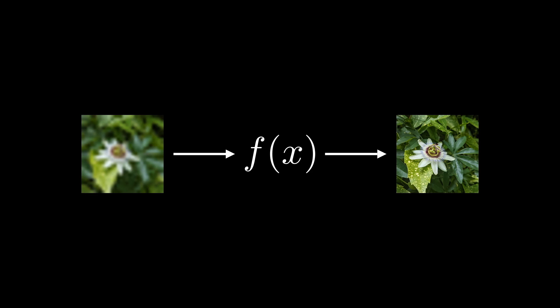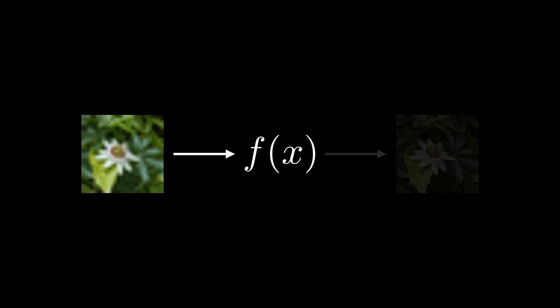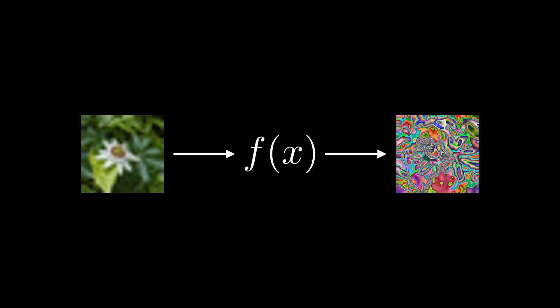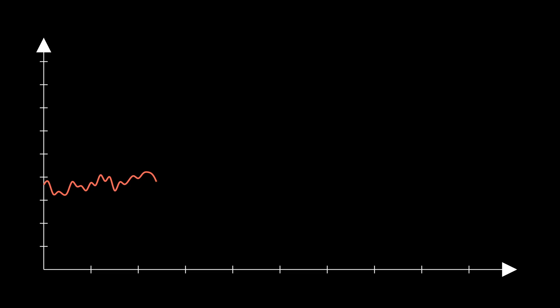Unfortunately, in practice, after training our network on high and low-resolution image pairs, our network is somehow spitting out images that are even worse than our input. After putting all your effort into a beautifully deep architecture, you are horrified to see that instead of going down, your training loss shoots endlessly upwards. Your classmates and colleagues can't help but laugh.